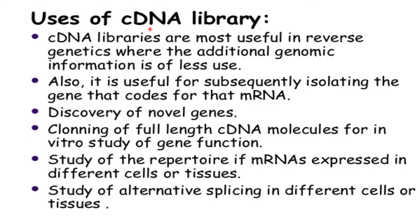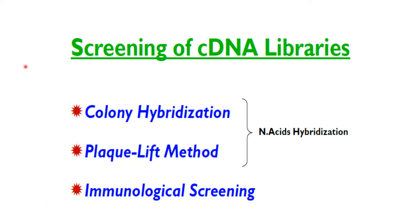Now what are the uses of cDNA library? cDNA libraries are most useful in reverse genetics where additional genomic information is of less use. They are also useful for subsequently isolating the gene that codes for a particular mRNA, discovery of novel genes, cloning of full-length cDNA molecules for in vitro study of gene function, study of mRNA expression in different cells or tissues, and study of alternative splicing in different cells or tissues. There are three types of screening: colony hybridization, plaque lift method — these two come under nucleic acid hybridization — and the third method is immunological screening.